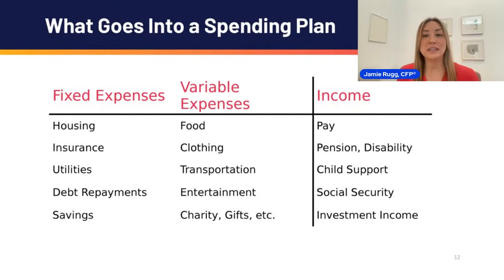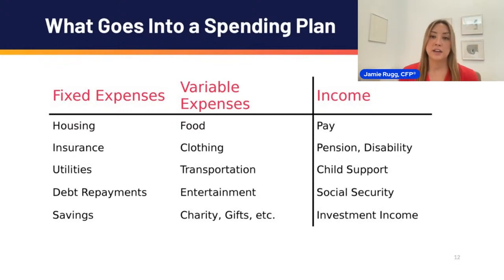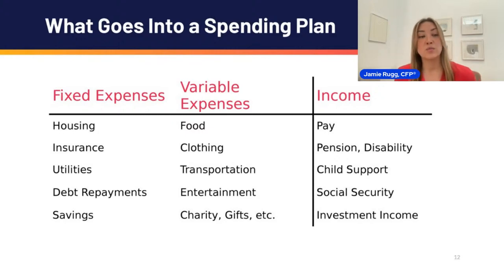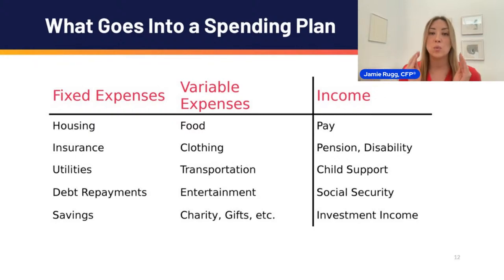Things that are fixed — things we really cannot budge much — include housing, fixed insurance payments for health insurance and car insurance, utilities, and debts. Whatever debt we agreed to pay each month, whether it's credit card minimums, mortgages, loans, or student loans. I really want everyone to think about savings as actually being part of your fixed expenses. It's especially hard to view it that way when things feel tight, but we want you to shift your thinking to make savings one of those fixed categories.